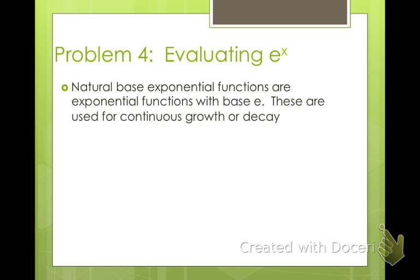Now we have e to the x power. So natural base exponents are exponential functions that have base e. So instead of having a number, we have e. e is kind of like pi. So pi is a number, 3.1415, you know, all those things. e is kind of the same way. So go ahead and type e into your calculator and just hit enter and see what it says.